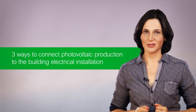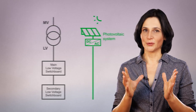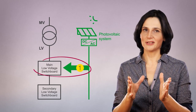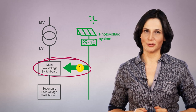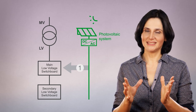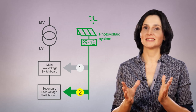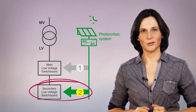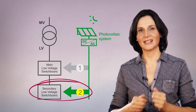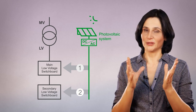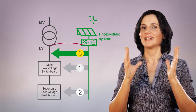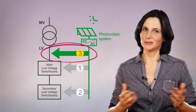To summarize, we have seen three ways to connect photovoltaic production for self-consumption. For new sites, where the photovoltaic production is part of the initial design: direct connection to the main low voltage switchboard. For existing buildings, especially multi-floor buildings or buildings with small scale production: connection to a secondary low voltage switchboard, usually the closest one. For existing buildings with photovoltaic production exceeding the building's consumption: connection upstream to the main low voltage switchboard is preferred.